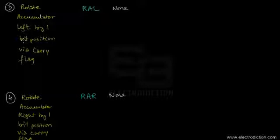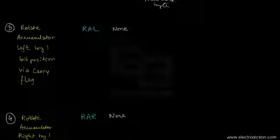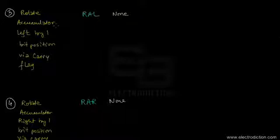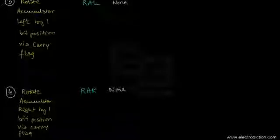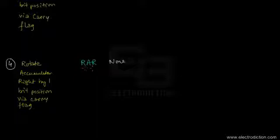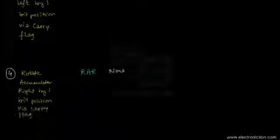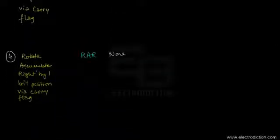Now we move on to instruction 3: RAL, which has no operands. This is also an accumulator bit rotating instruction — it rotates accumulator left by one bit position via the carry flag. The main difference between these instructions and the RAR instruction (instruction 4) is that RAR rotates accumulator right by one bit position via the carry flag — it's the opposite of RAL.